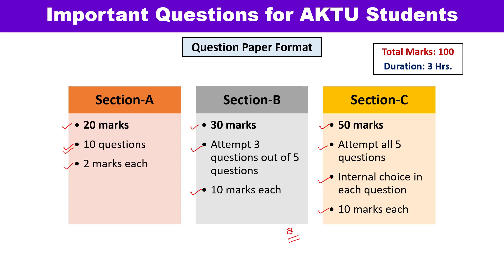My advice is to first attempt Section B and C, and in the last 45 minutes attempt Section A, because Section A's weightage is very less — only 20 marks. Sometimes students spend most of the time in Section A, which is not advisable. So first attempt Section B, then Section C, and then Section A.